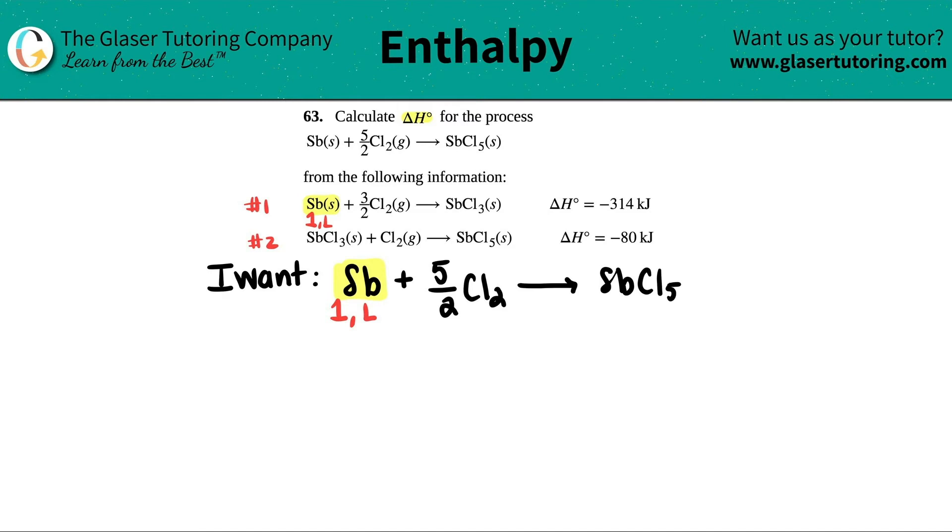So all I'm gonna do is I'm just going to rewrite the first equation. So maybe I'll do that one in red. So I got Sb plus three over two Cl2 yields SbCl3. And now I'm going to put the delta H value. I did not do anything to this equation, so this stays exactly the same. Now I can put a check mark here, but we're not focusing on this anymore.